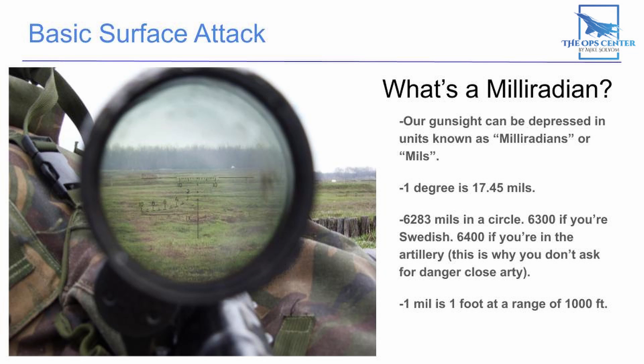Our gun sight uses the mil as its unit of measure — mil is short for milliradians. There are 17.45 mils in one degree and 6,283 mils in a circle, but all you need to remember is that one mil equals one foot at a range of 1,000 feet. Armed with that knowledge, you can figure out how far away something is by measuring how many mils it takes up in your sight picture. For example, if an average-sized man fits underneath the two on a graduated line, he's 200 meters away; underneath the four means 400 meters away, and so on.